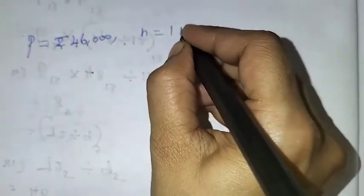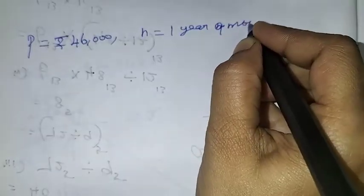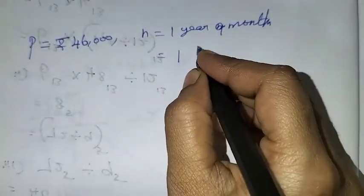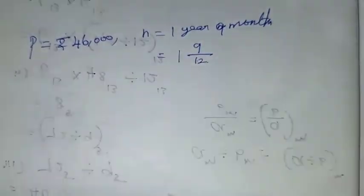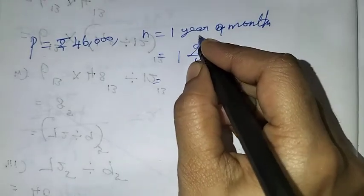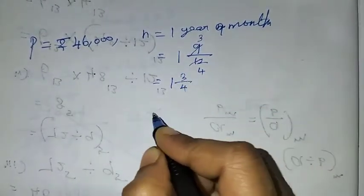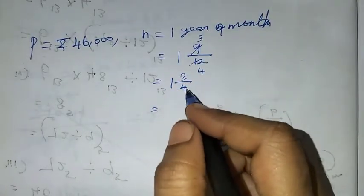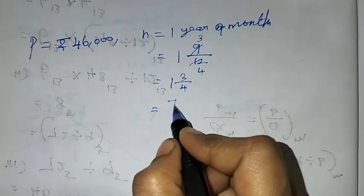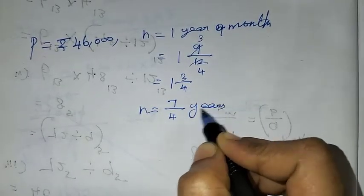Now we calculate the time. N is 1 year and 9 months. To convert months to years, divide by 12. 9 divided by 12 gives 3 by 4. So N is 1 and 3 by 4 years, which as an improper fraction is 7 by 4 years.